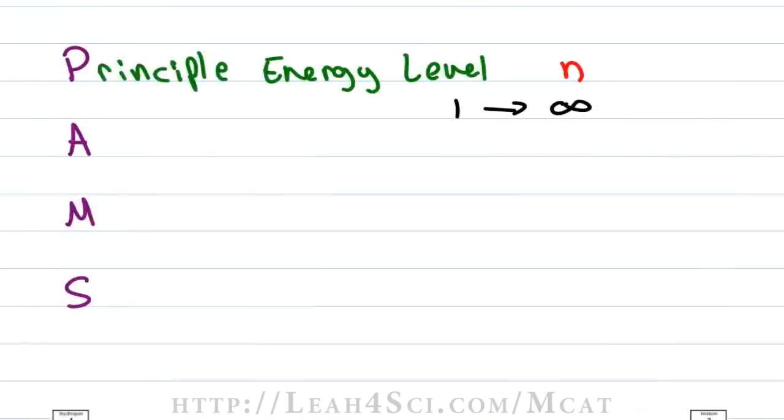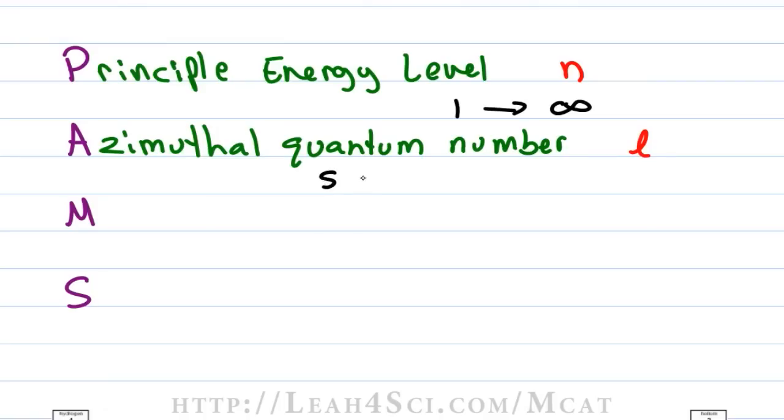The next quantum number to look at is A for azimuthal quantum number and this is designated by a lower case L. The L represents the orbital in which the electron is found and on the MCAT, you only have to know the S, P, D and F orbitals. Mathematically, the range for the azimuthal number is from 0 all the way to N minus 1.